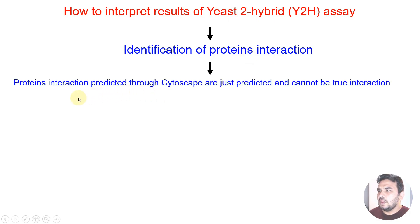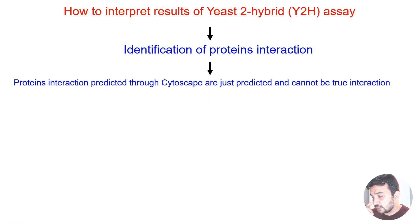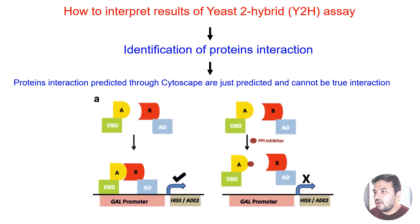Protein interactions predicted through Cytoscape or other in silico analysis software are just predicted and cannot be confirmed as true interactions, because most of them are based on algorithms. It is therefore required that we first verify those interactions through yeast two-hybrid assay.